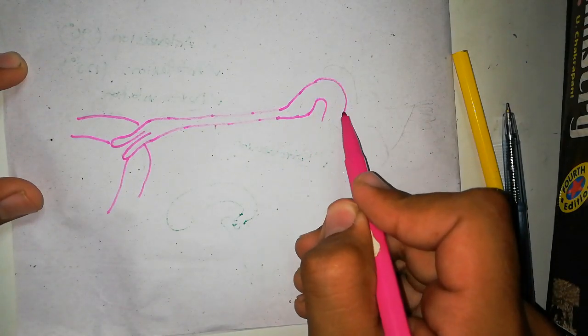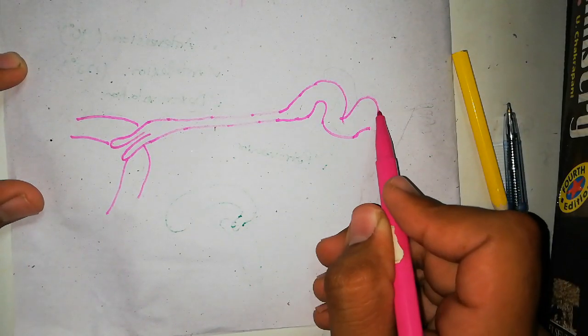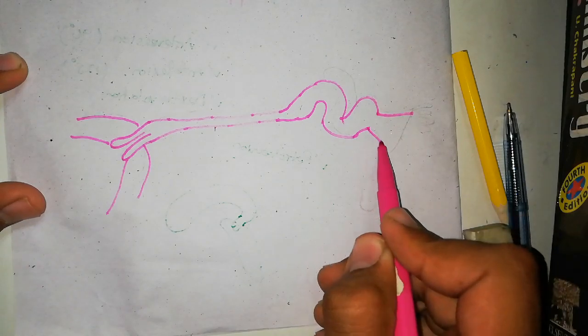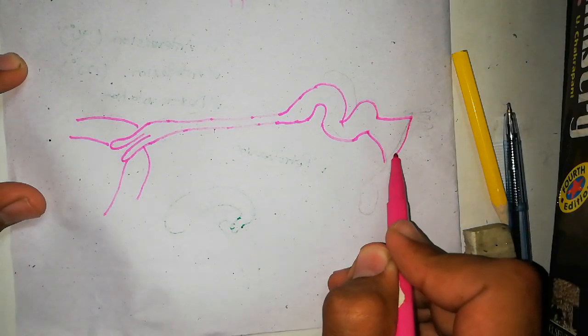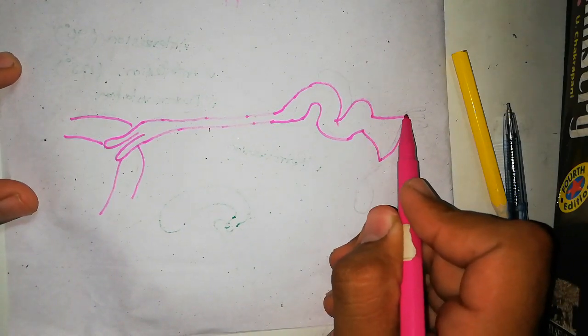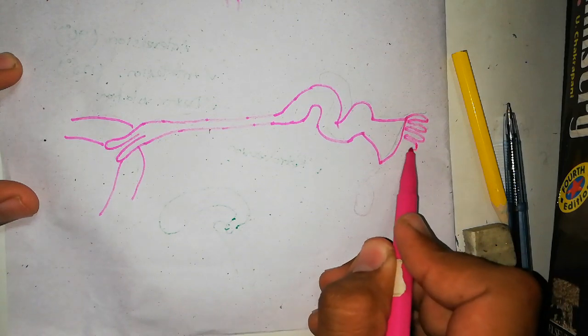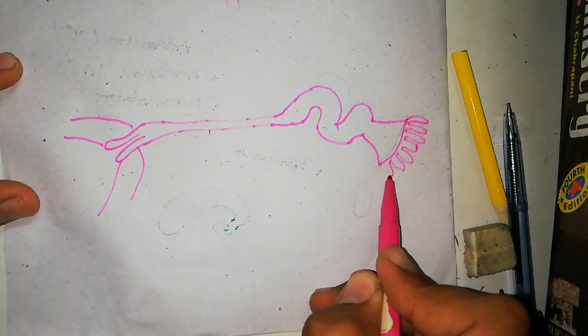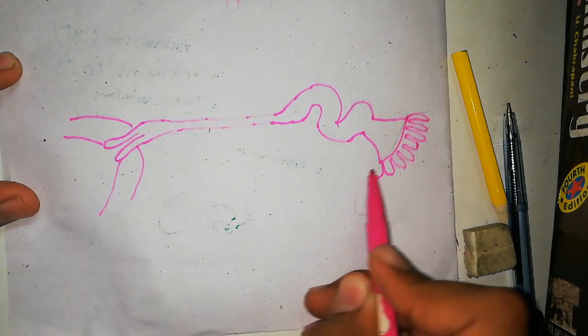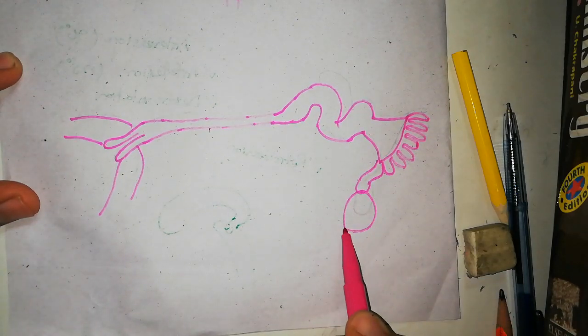Before ending, it will expand and become a tortuous and expanded tube. This part will actually be called the ampulla of uterine tube. It will then end into a funnel-shaped opening. This funnel-shaped opening has finger-like projections which are called the fimbria.